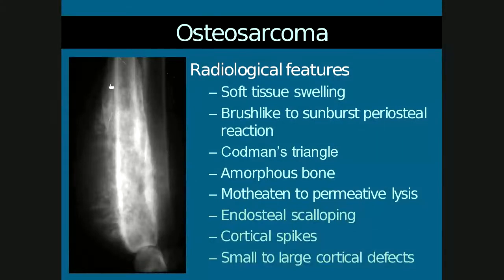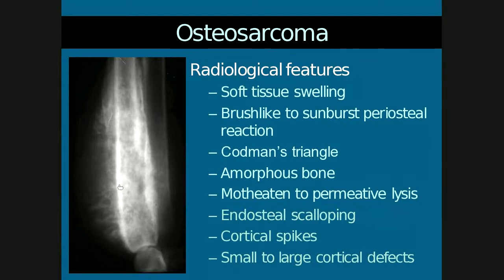The type of scalloping in neoplasia occurs from within the medulla, so it is endosteal, because the neoplasm usually originates within the medulla and eats away from the inner margin of the cortex or the endosteal surface. Cortical spike formation occurs when there's a defect in the cortex, and small to large cortical defects may be present — sometimes so severe that large portions of bone appear absent.